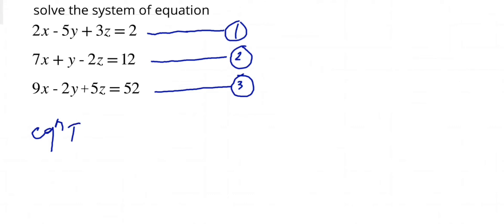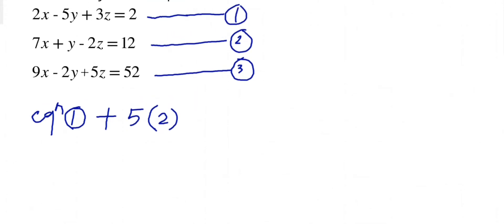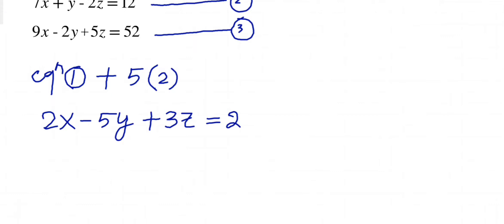So I'll take equation 1 and I'll multiply 5 with equation 2. Now what will happen if I do this? Equation 1 is 2x minus 5y plus 3z equals to 2. Now if I multiply 5 to equation 2, then what happens? 7 times 5 is 35, so I'll get 35x plus 5y minus 10z.